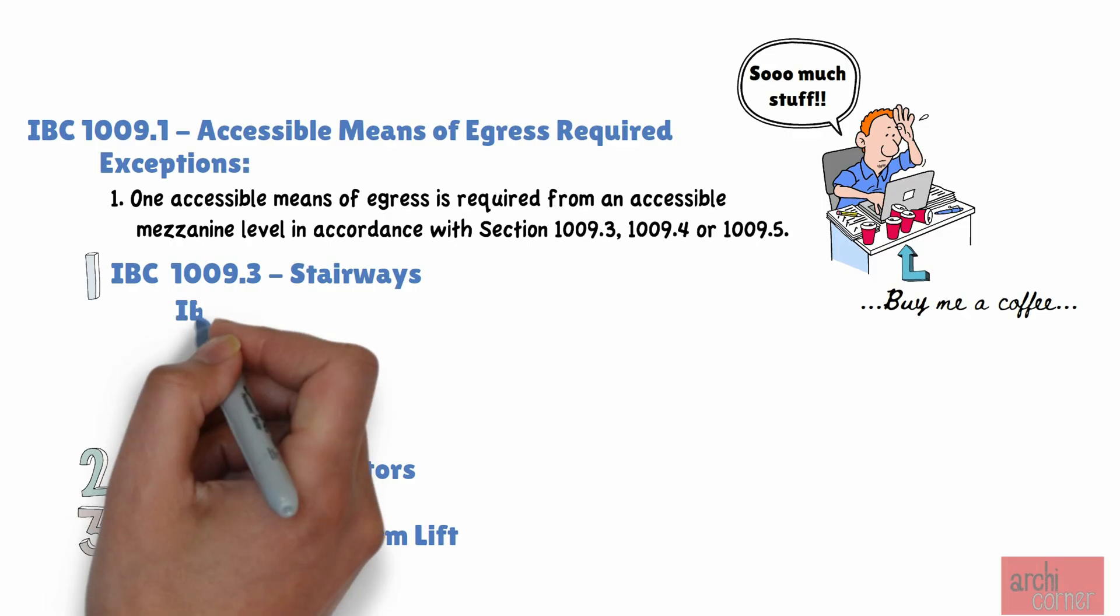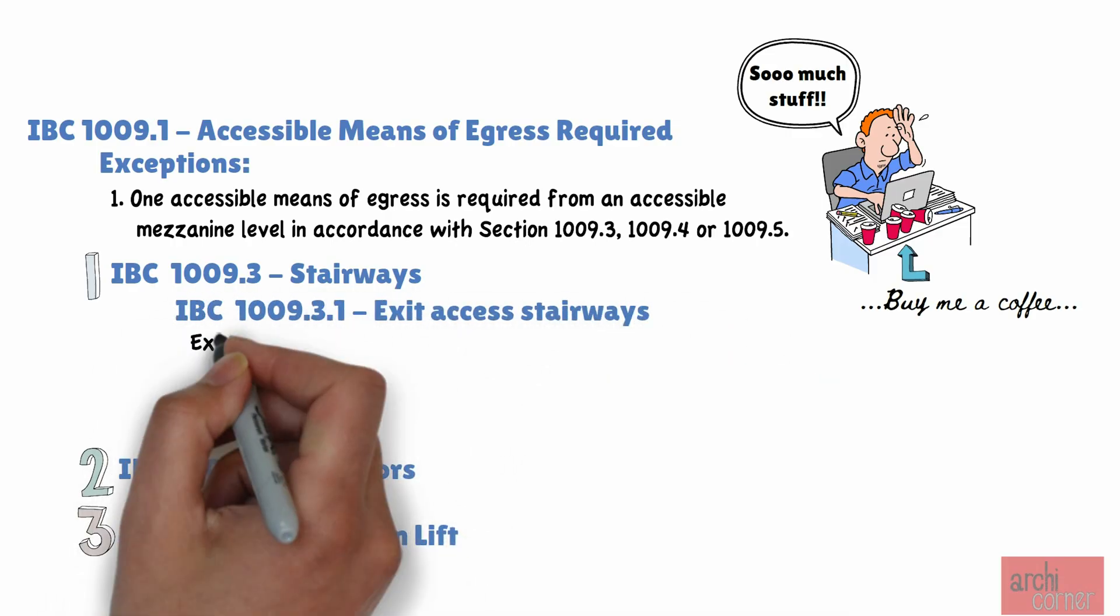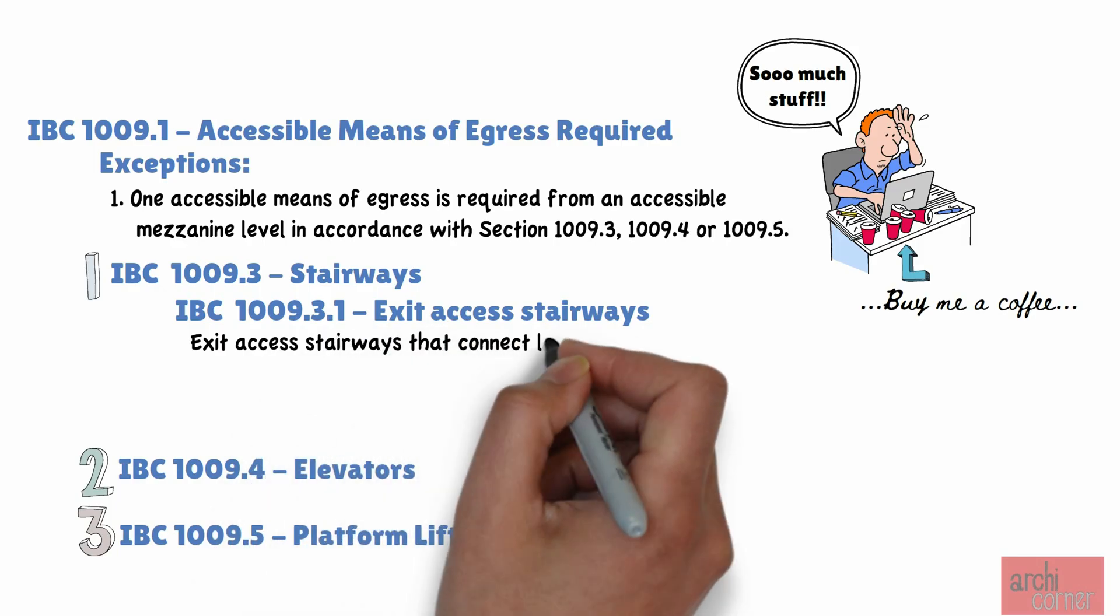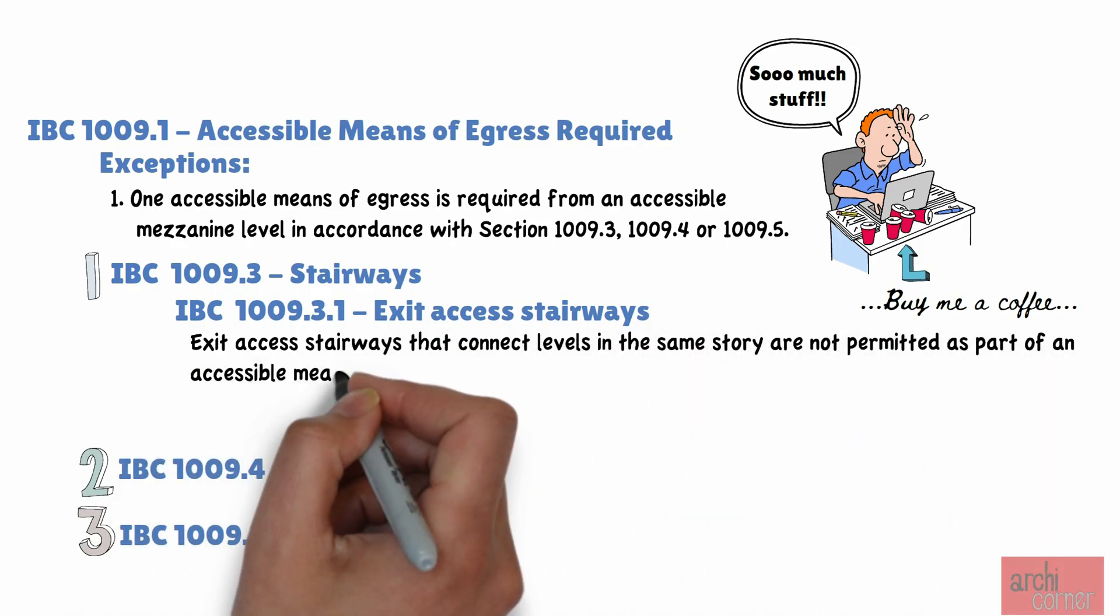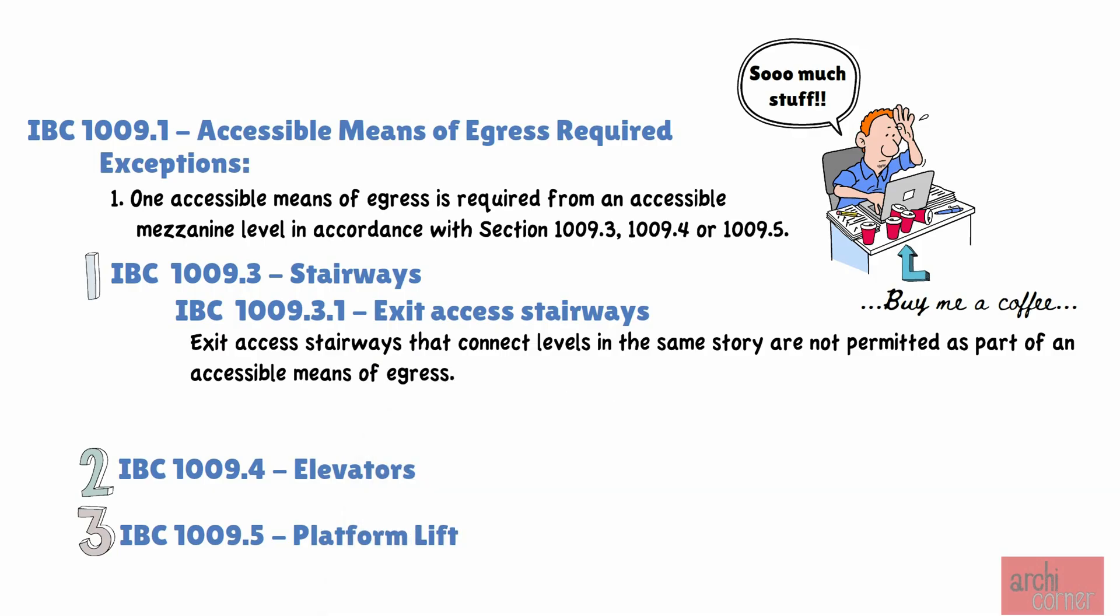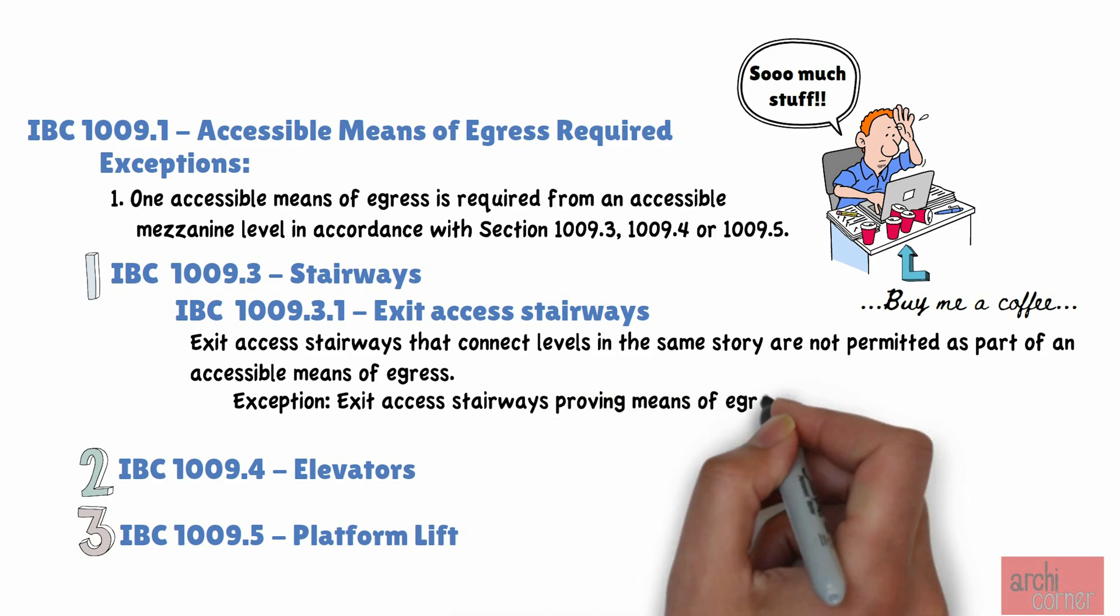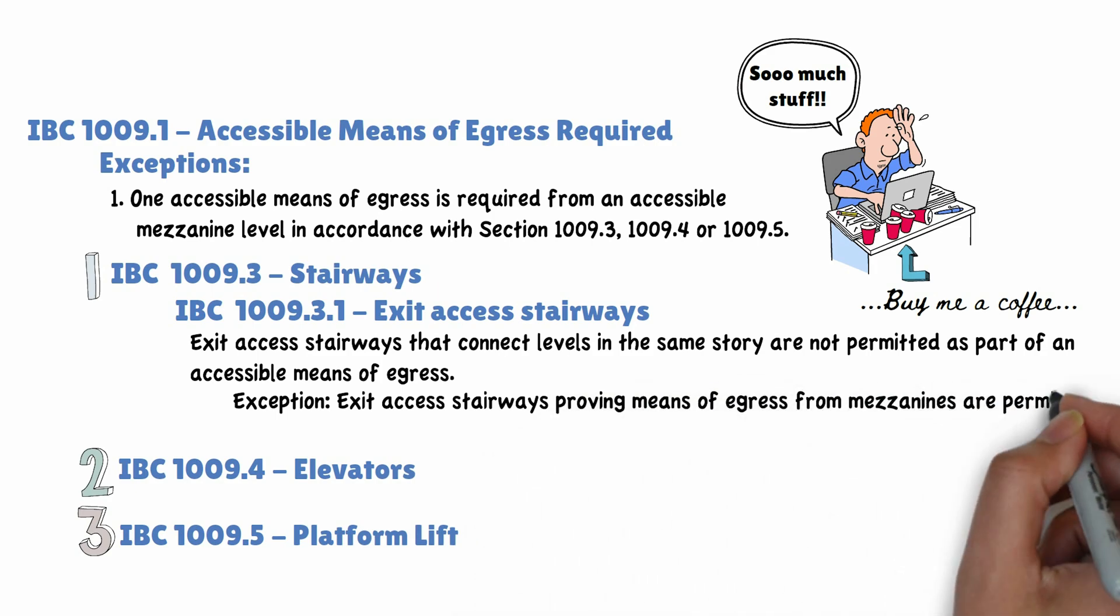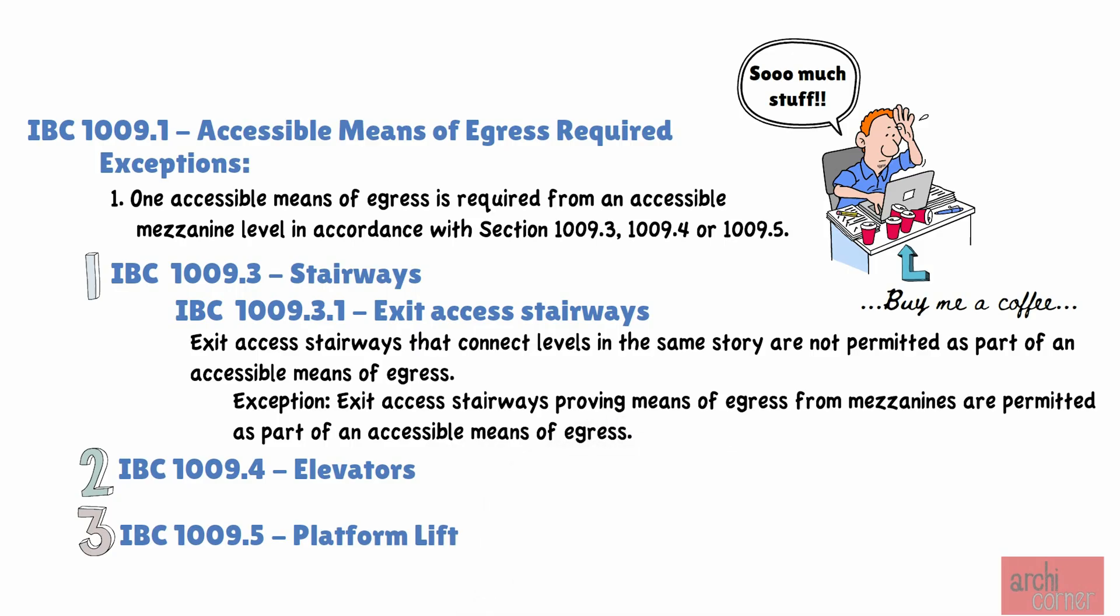Interestingly enough, as a side note, IBC section 1009.3.1 states that exit access stairways that connect levels in the same story are not permitted as part of an accessible means of egress. However, there is also an exception that reads that exit access stairways providing means of egress for mezzanines are permitted as part of an accessible means of egress.